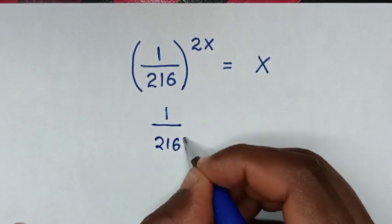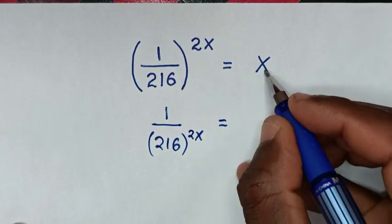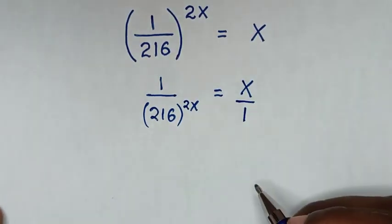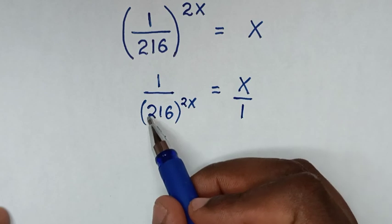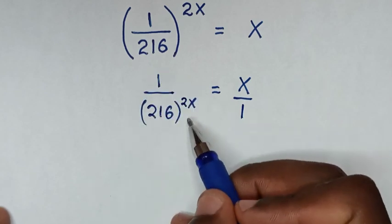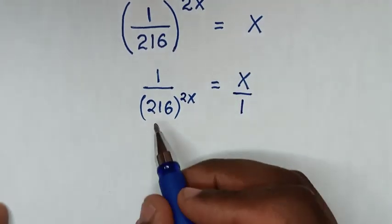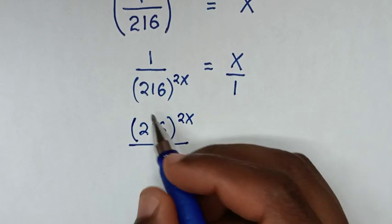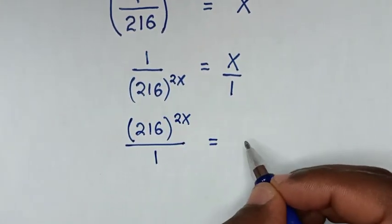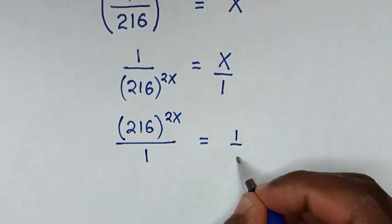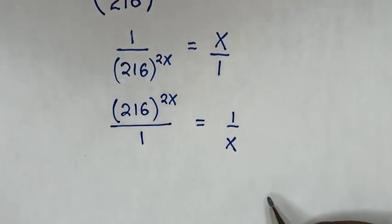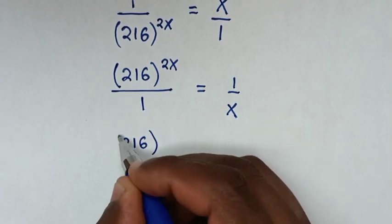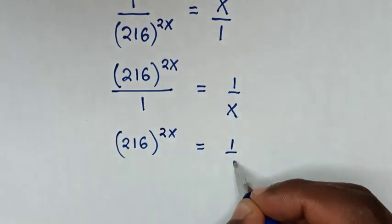So 216^(2x) = x. Then this x is the same as x over 1. In the next step we take the reciprocal — this into the numerator and this into the denominator. So it will be 216^(2x) over 1, which is equal to the reciprocal of x over 1, which is 1 over x.